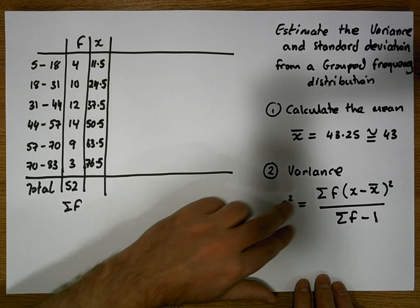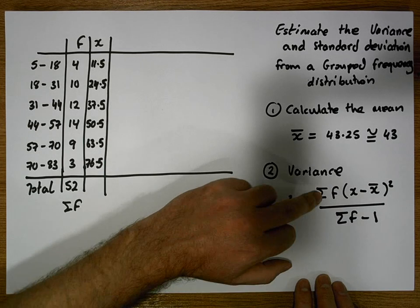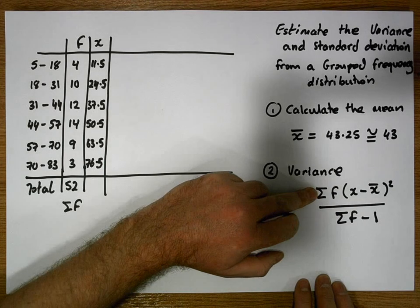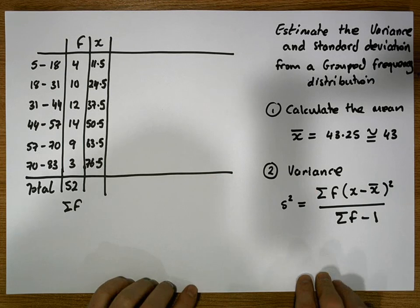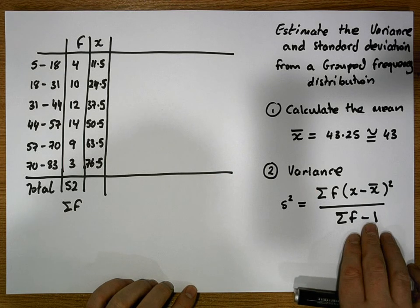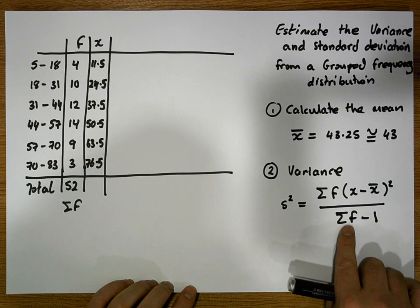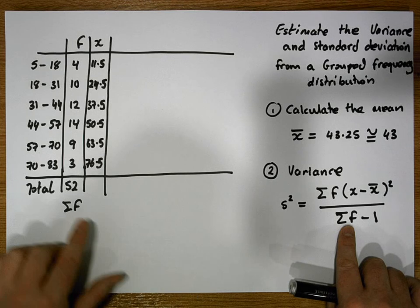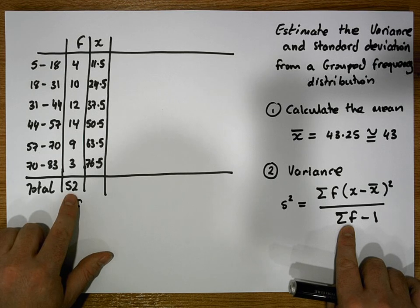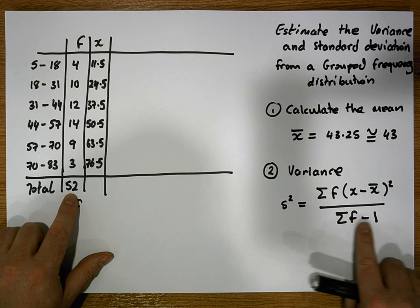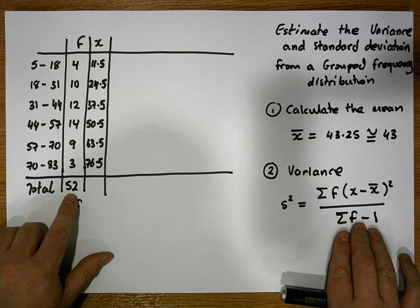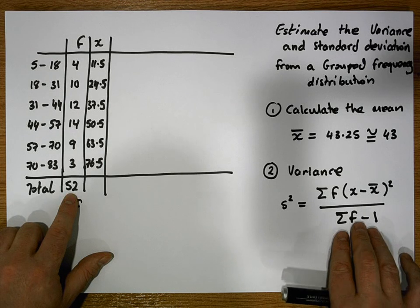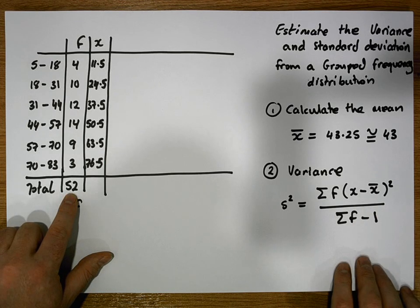Let's do this in stages. We need the numerator and the denominator. We already have the denominator: the sum of the f column is equal to 52, so 52 minus one is equal to 51. So we have half of this formula already.